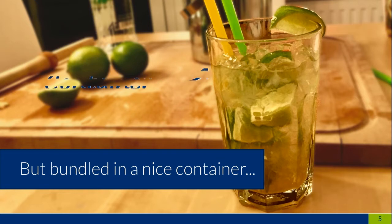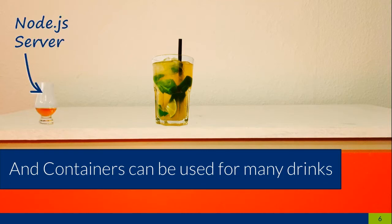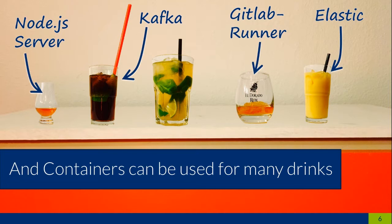A glass in this case seems to be something kind of similar to a container. It's there for creating isolation, it's there for having things packaged so that you can more easily distribute it, give it to a friend, take it with you. And just as a glass can not only be used for Caipirinha but for a lot of different drinks, containers can also be used for a lot of different technologies. In the beginning containers were more used for easy stuff like stateless workloads — like a web server distributing files to clients — but these days you can use Docker containers for almost everything. You can even run databases such as Elasticsearch, or use it for Kafka.